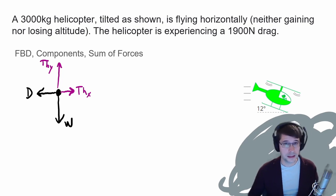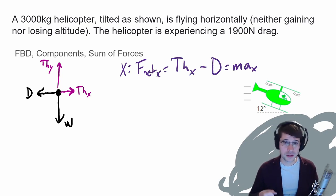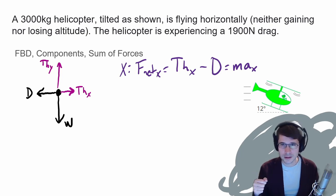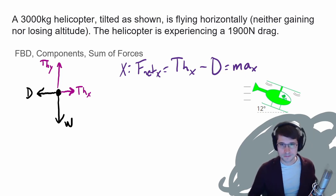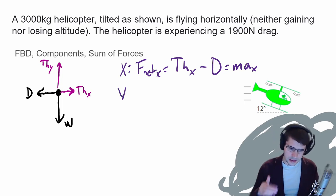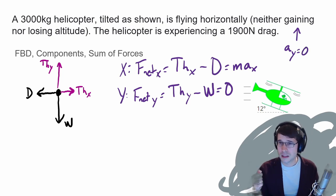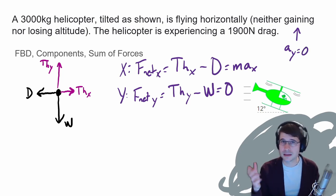Next, write down the sum of the forces. We take all forces in one direction: in the X direction, that's thrust-X minus drag, and the net force equals mass times acceleration in X (ma_x). We do the same in the Y direction: thrust-Y minus weight equals the net Y force. That net Y force equals zero because the acceleration in the Y direction is zero — the helicopter is not gaining or losing altitude.